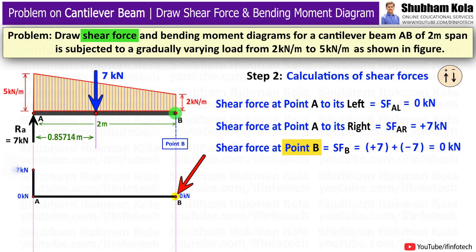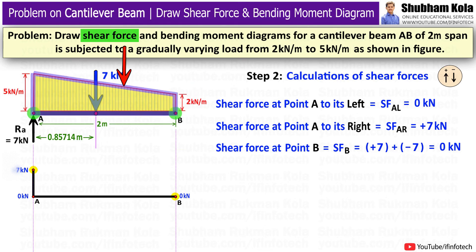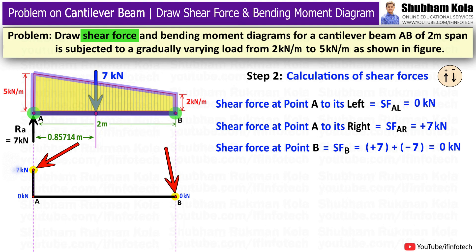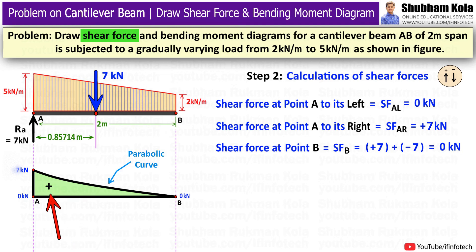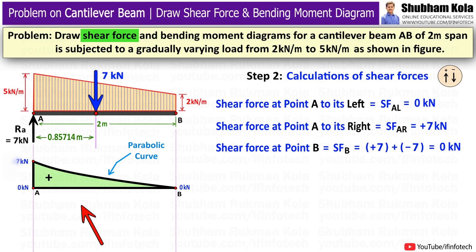I will mark the point of 0kN shear force at point B. Between point A and point B, there is uniformly varying load, so to draw the shear force diagram I will indicate this with a parabolic curve connecting the two points. The portion drawn above the reference line is shown with a positive sign. The shear force diagram is now complete.